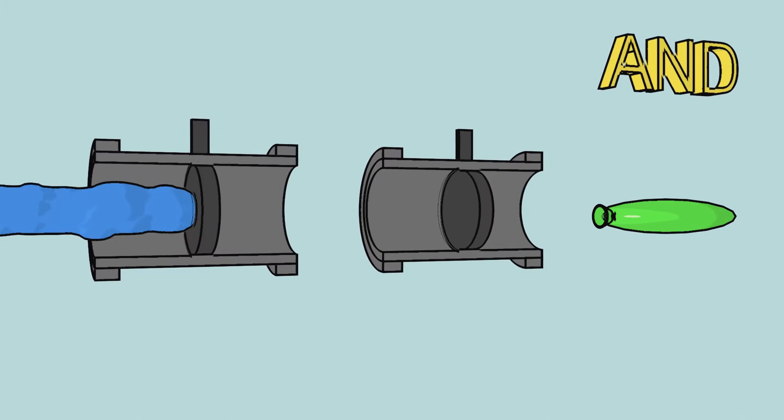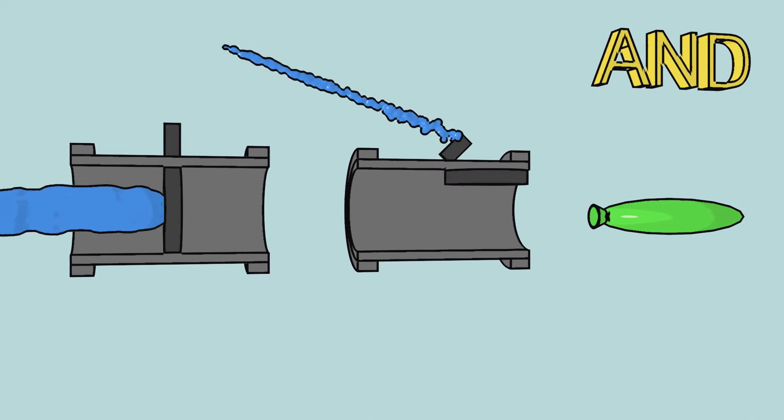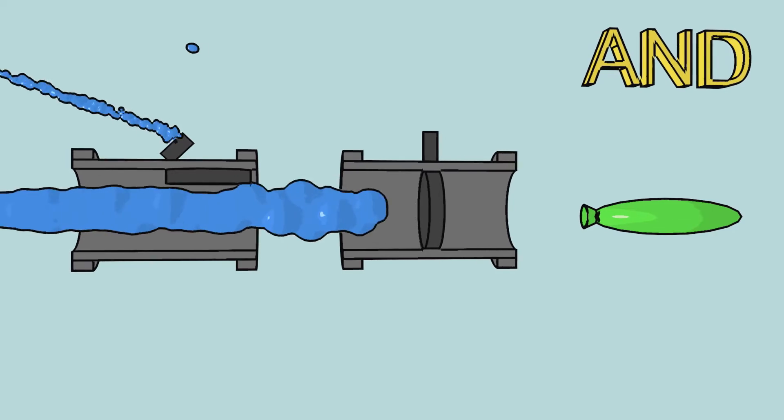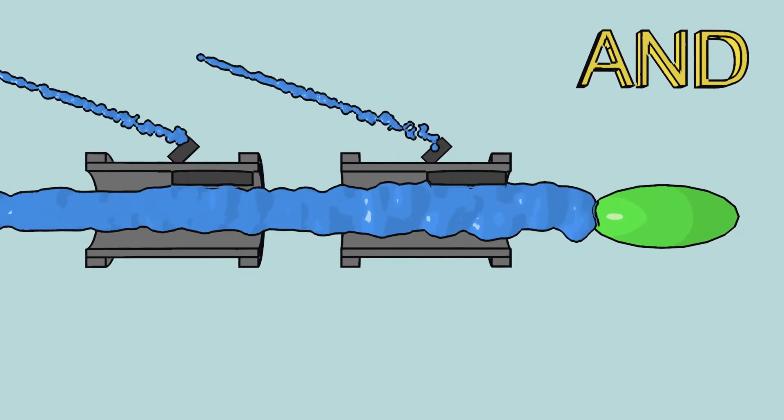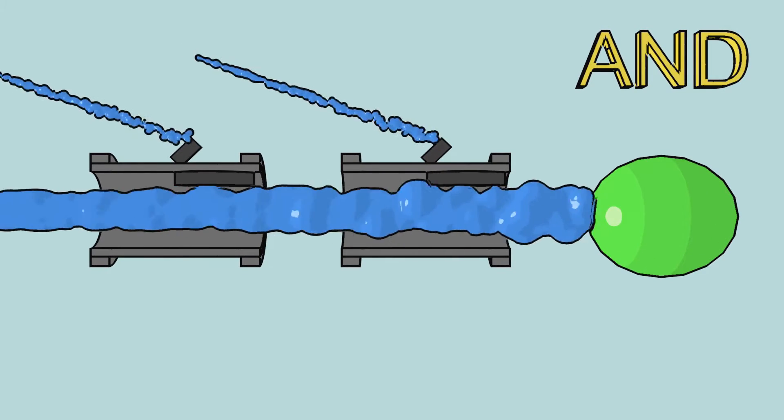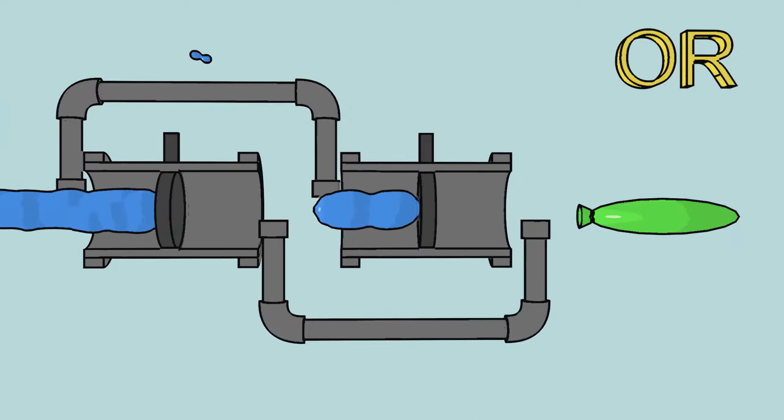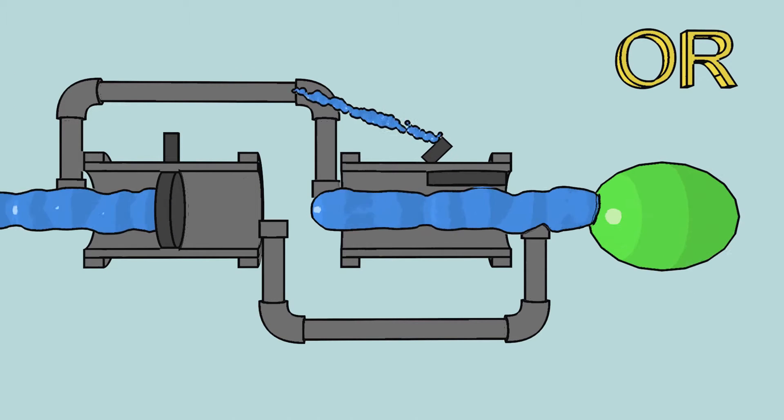If we arrange two transistors in series, then we know the first transistor and the second both need to be on for water to flow through. This is called the AND gate. Or we can make a path for either transistor, thus creating the OR gate.